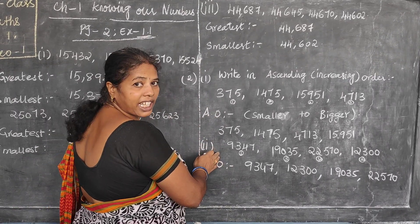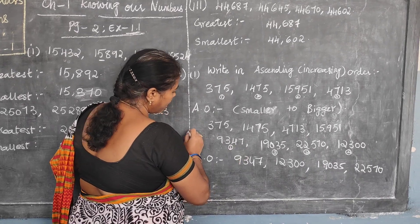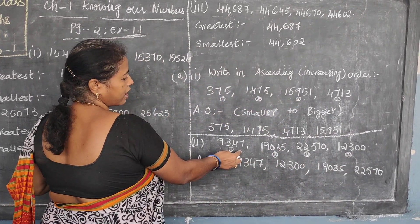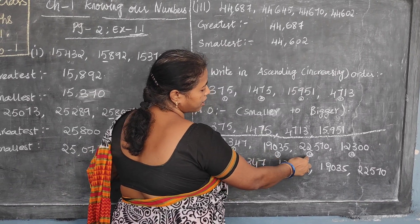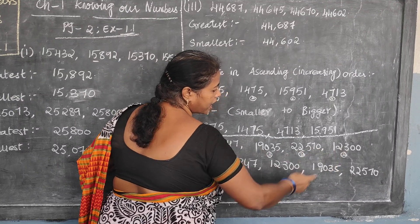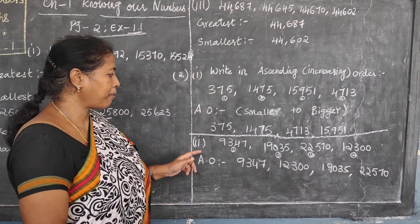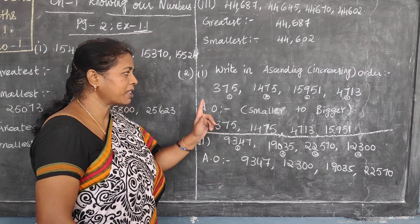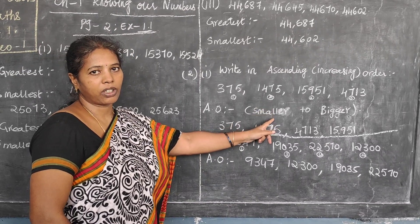Next, the second question. They gave: 9347 — 19035 — 22570 — 12300. You should be able to read these numbers, children, by this age. Ascending order means what? Ascending order means from smaller number to bigger number only. Ascending order is also called increasing order.